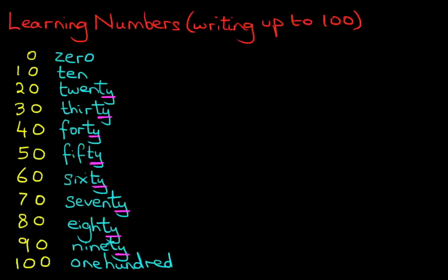Now, we know how to write all the numbers from 0 to 9, and we also know how to write all the numbers from 0 to 100. Therefore, writing the numbers up to 100 should be very simple. And we're going to do that now.